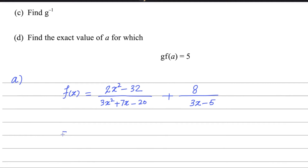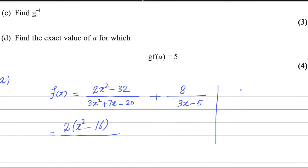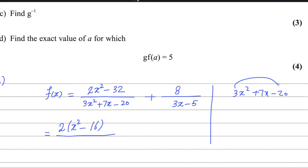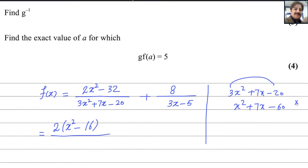The numerator is very easy to factorize. We can take 2 as a common factor, and write it as 2 times x squared minus 16, divided by the denominator which we need to factorize: 3x squared plus 7x minus 20. There is a technique for factorizing this quadratic — multiply 3 by 20 to get 60, which eliminates the leading coefficient and makes it easier to factorize.